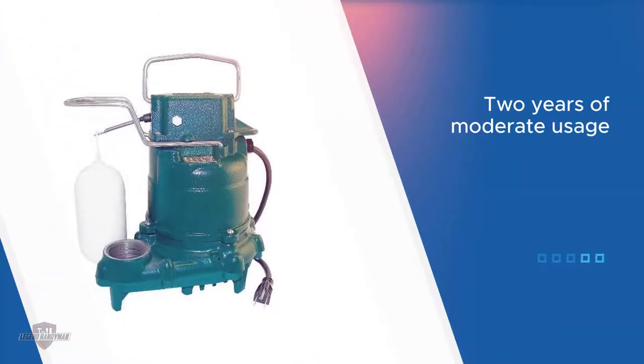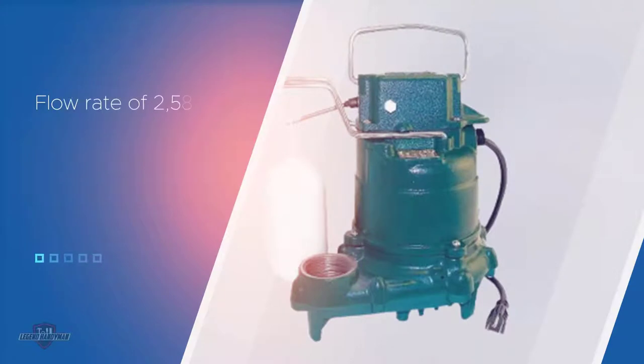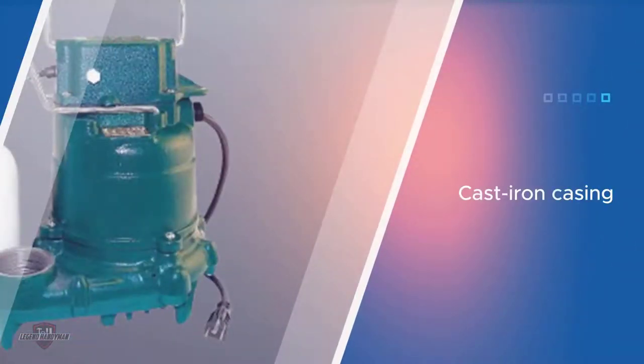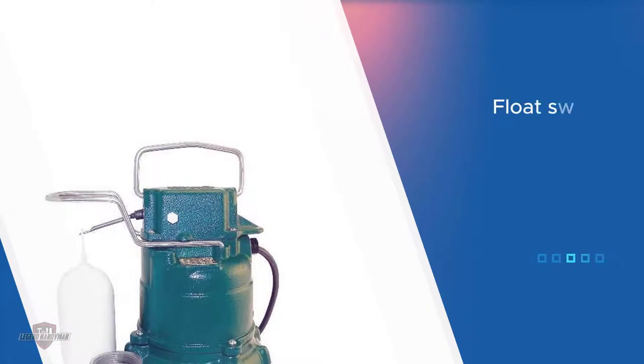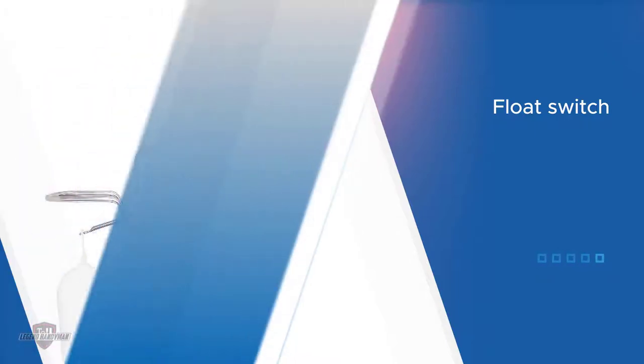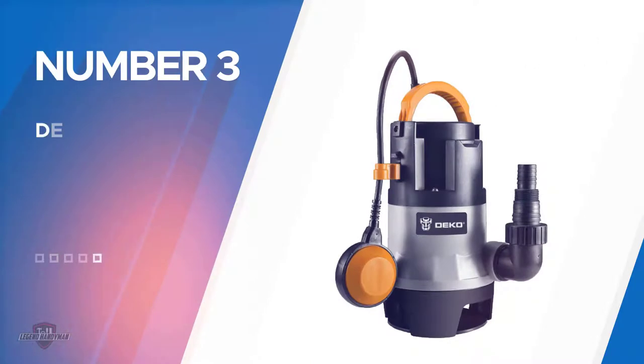A cast iron casing keeps the motor inside safe from damage. A three-year warranty backs up the reliability of this submersible pump. The float switch is a common failure on these pumps. Sometimes they fail in as little as one to two years of moderate usage.